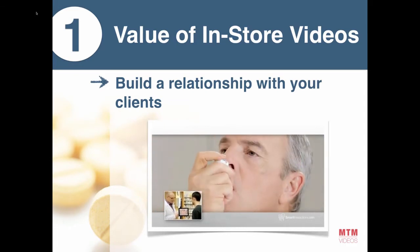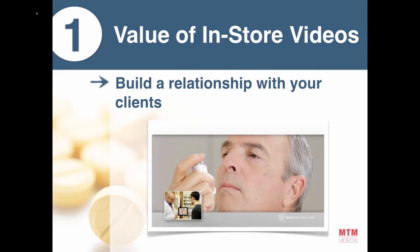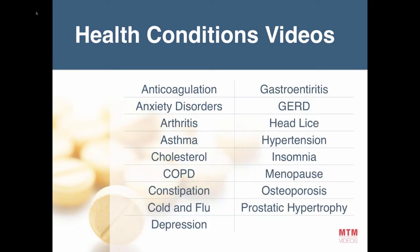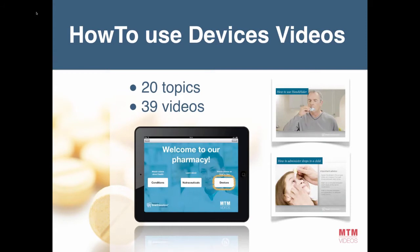Our first library is about health conditions — it has 74 videos and is located under the Conditions button in the iPad. All those videos can also be sent from the iPad and viewed in the pharmacy. We also have the 'How to Use Devices' library: 20 topics divided into 39 videos, located under the Devices button of your app.